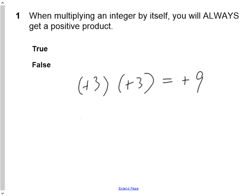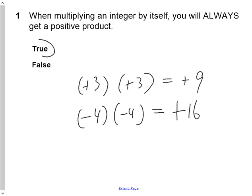Conversely, if I took a negative number, let's say negative 4, and multiplied it by itself, I would get 4 times 4 is 16, but a negative number times itself is a positive number as well. So in both instances, when I take an integer, regardless of what number it is, and multiply it by itself, the answer will indeed be a positive product, because two signs that are alike will always multiply out to give you a positive product.